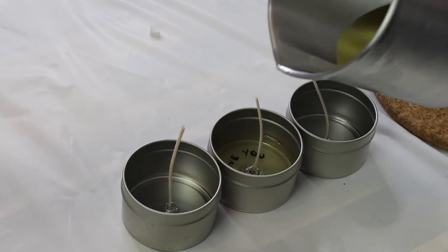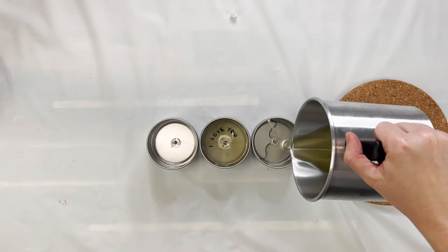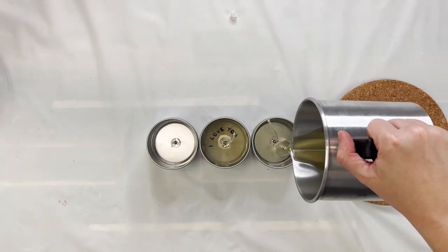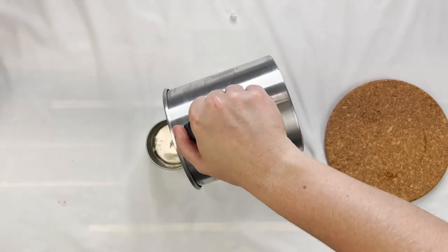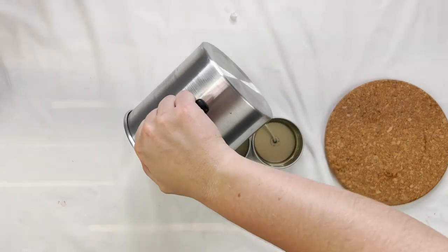When my wax was all melted down I just poured about half on top of that I love you. Because this one is going to be right at the bottom and then my next two candles I poured the wax and filled them up halfway because I'm going to add the next messages in the middle of the candle just to see if that makes any difference.